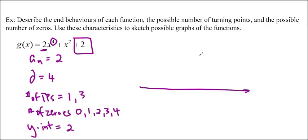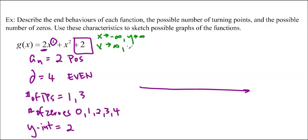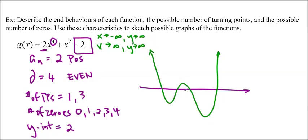Because the leading coefficient is positive and the degree is even, the function opens upwards. The end behavior: as x approaches negative infinity y approaches infinity, and as x approaches positive infinity y also approaches positive infinity. I'll draw it with 3 turning points and 4 zeros, with the y-intercept at positive 2. That is one of the possibilities for this graph — we can't do much better than this without more information.